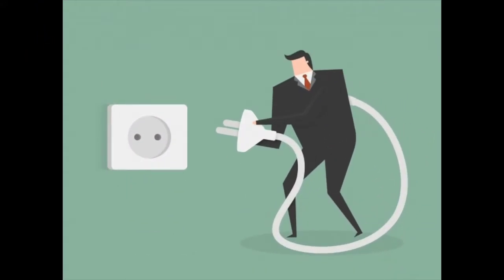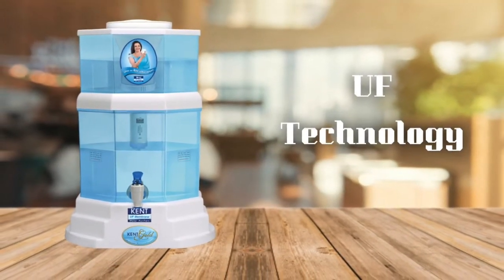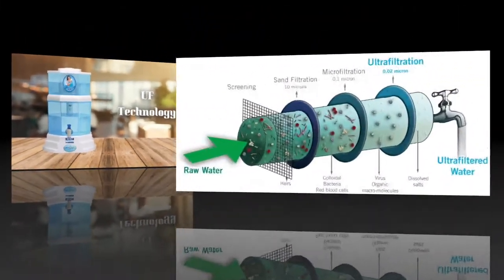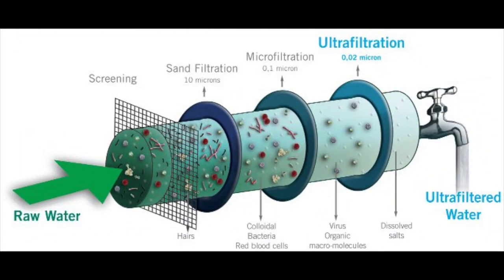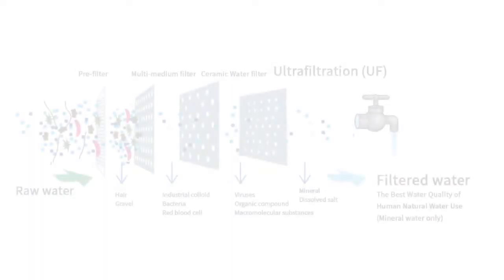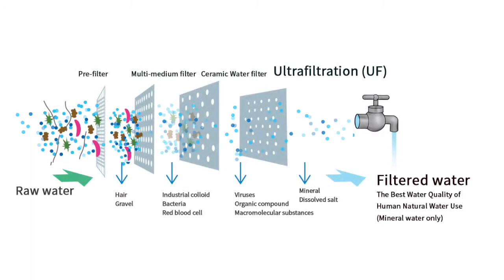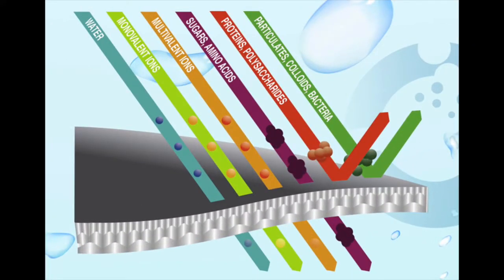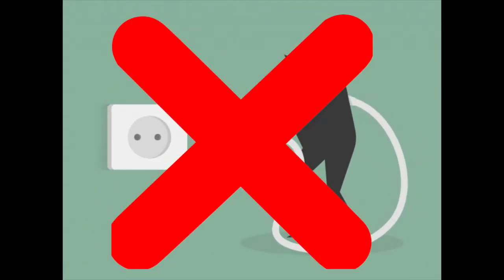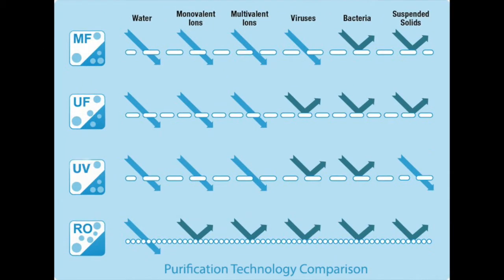This technology also requires electricity. Third is UF technology. UF is an acronym for ultrafiltration. This technology is also used to remove bacteria and germs from the contaminated water. The pore size of UF membrane is comparatively bigger than RO membrane, but it does not allow any virus, bacteria, and germs to pass through it. This technology does not require electricity. However, UF technology is not as powerful as RO and UV, as it is not able to remove heavy metals and dissolved salts.